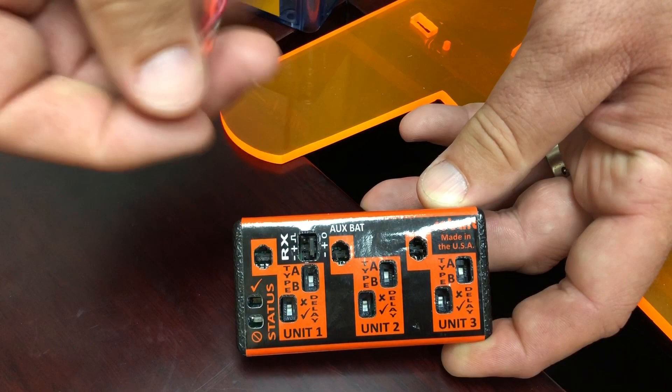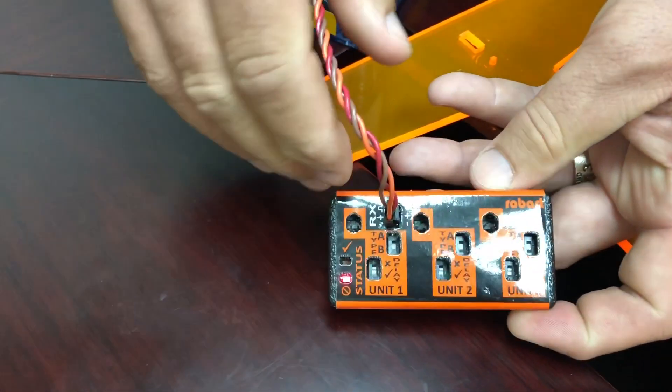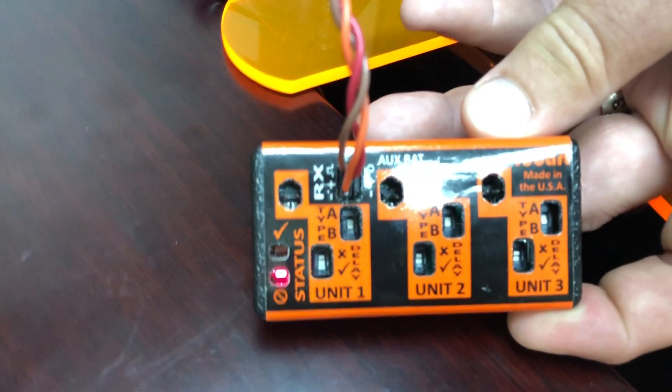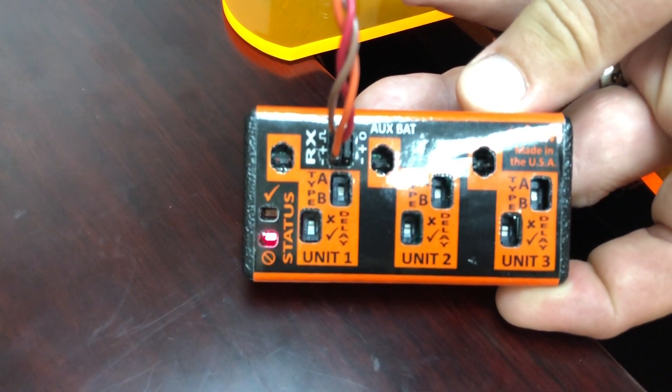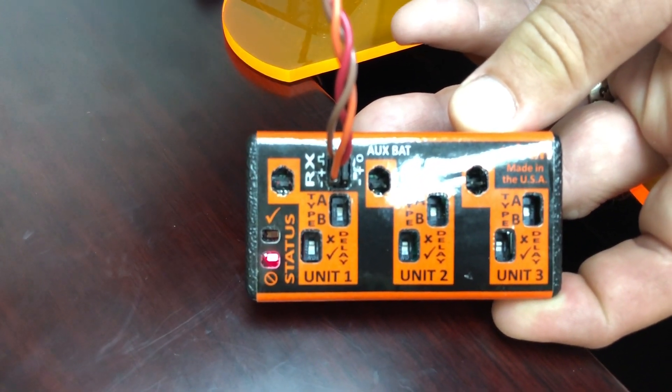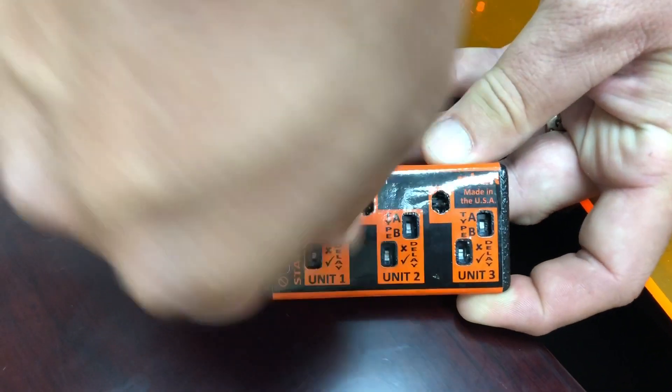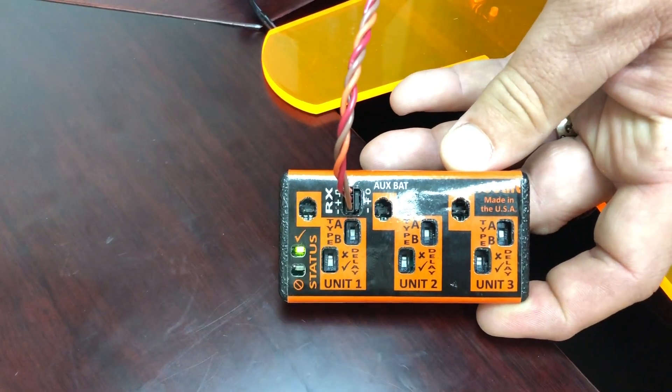If you were to turn this around and plug it in incorrectly, let's say you put the brown on the signal wire, now you get a red light. So if you have a red light, that's the first thing I want you to check. Make sure that your brown wire is plugged into the negative, and then you can get a green light.